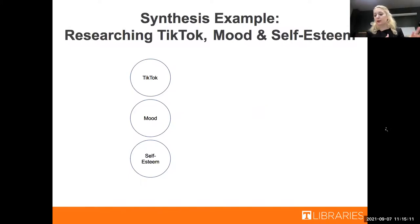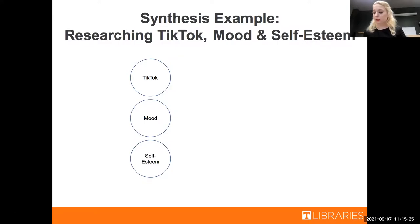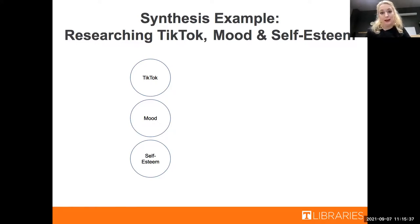Let's go back to the earlier example. Say you're researching how using TikTok impacts a person's mood and self-esteem, and you need at least three scholarly sources for your assignment. To start a synthesis approach on this topic, you might want to break down your research question into the elements you're looking for. In this case, you're looking at three different elements: one, TikTok; two, mood; and three, self-esteem. These three things will become your keywords — think of them as individual elements when you're searching.